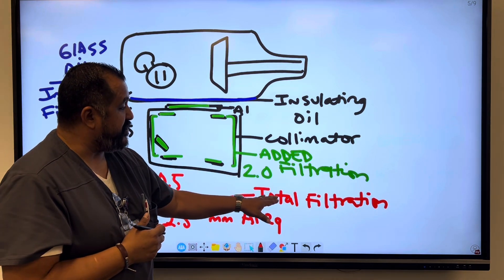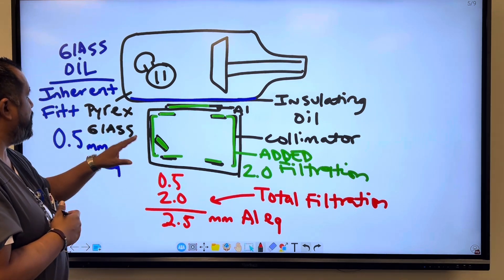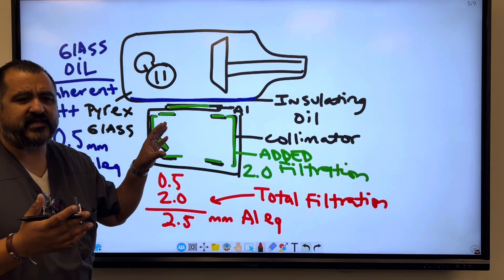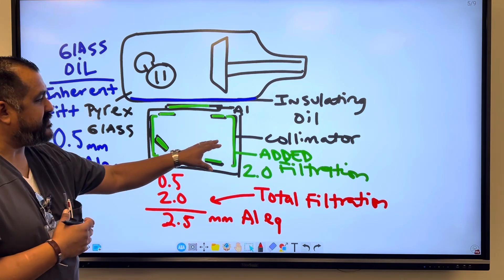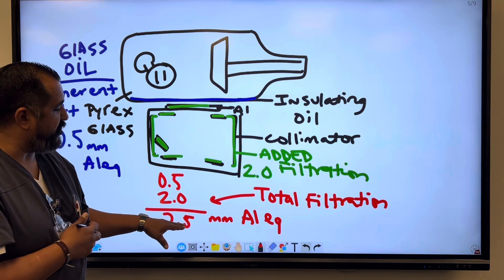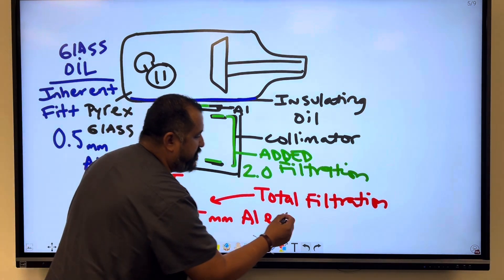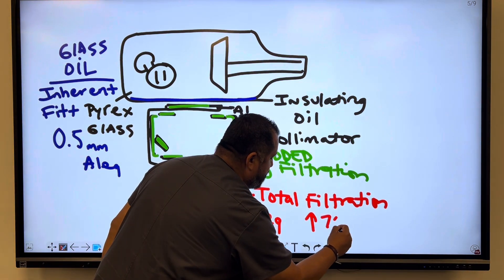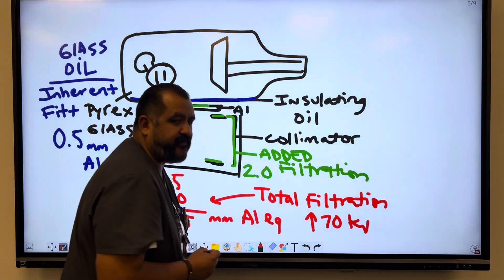So total filtration, again, is the combination of the inherent - and inherent means built in or manufactured in - and added, something that we add to it. So the total filtration is 2.5 millimeter of aluminum equivalent, because we operate with systems that go above 70 kVp.